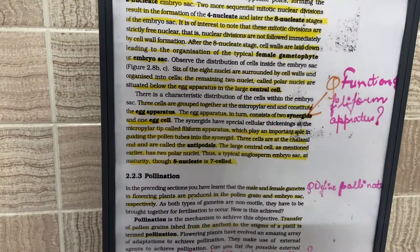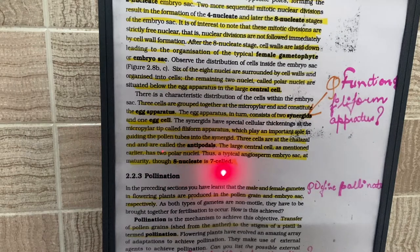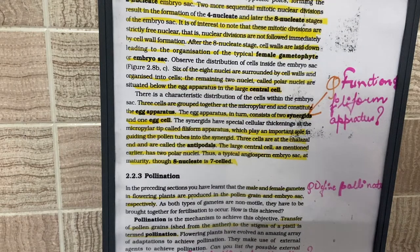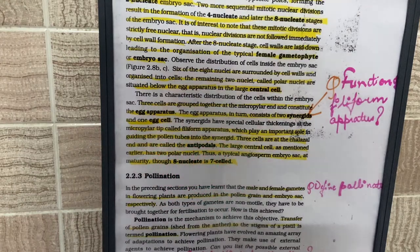Another important question: how many nuclei and how many cells does the embryo sac have? The embryo sac is an eight-nucleated and seven-celled structure. It is seven-celled because the two polar nuclei present in the middle share one central cell, making it eight nucleated but only seven celled.